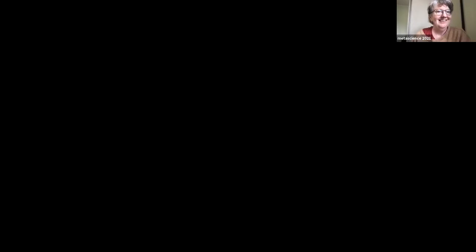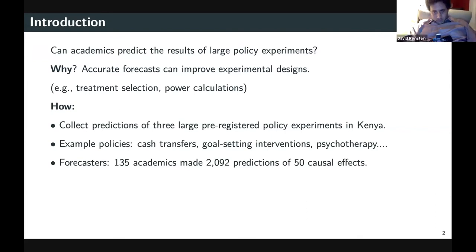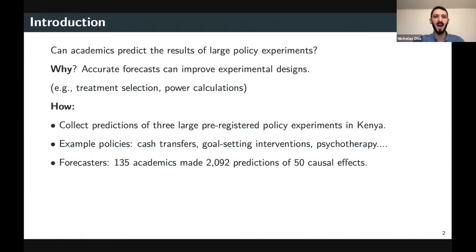The next presentation in our session is by Nicholas Otis. This talk is called Forecasting in the Field: Evidence from Policy Experiments. This project asks whether academics can accurately forecast the results of large-scale policy experiments. This question is important because if accurate, we can use people's predictions to select and test better policies. I collect predictions from three large-scale pre-registered randomized controlled trials in Kenya, evaluating treatments from cash transfer interventions to mental health interventions. In total, I collect 2,100 predictions from 135 academics of 50 causal effects.